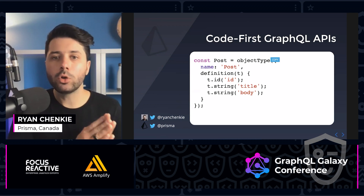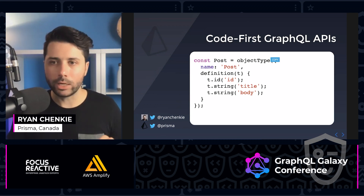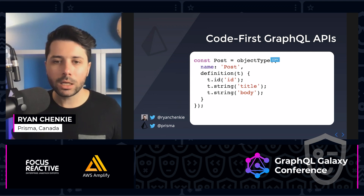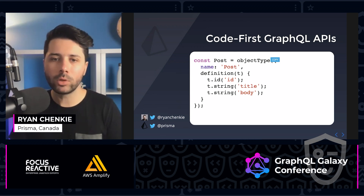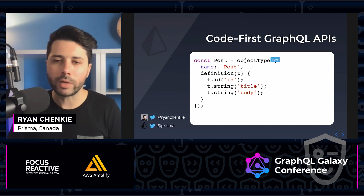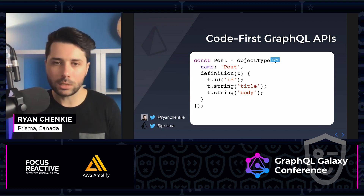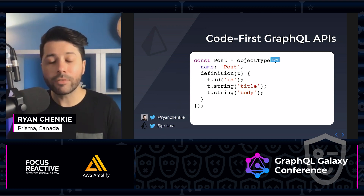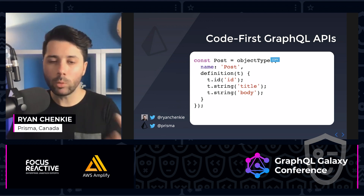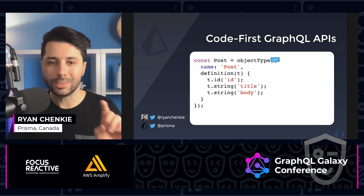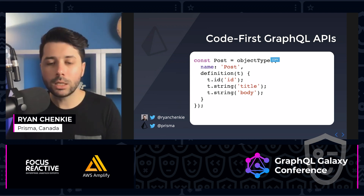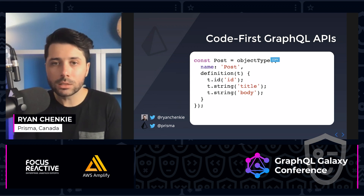We can take a different approach — the code-first approach to writing GraphQL APIs. What that looks like is something like this — this is Nexus. We're defining a GraphQL schema here, but doing it all in code, in TypeScript. We've got this thing called objectType from Nexus Schema, which allows us to define a type — in this case, the Post type. We've got a definition method where we say we want an ID named ID with T.id, and then T.string for title and body.